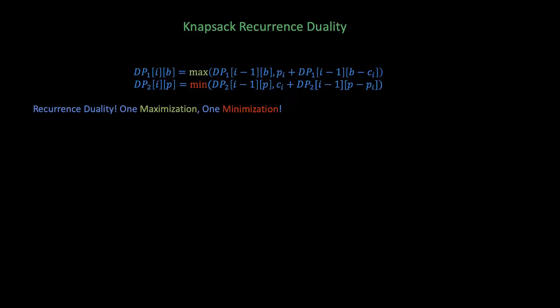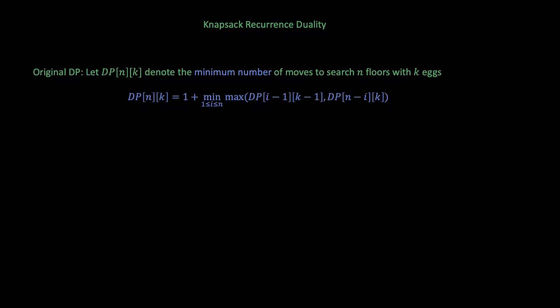This is not only specific to the knapsack problem but can be applied to so many other problems like the bin packing problem for example. Now the question here is can we do this to the egg drop problem? Can we get a dual recurrence and the answer turns out to be yes. Previously we defined DP[N][K] as the minimum number of moves to search N floors with K eggs. Now let's try to define the dual recurrence. Let DP2[T][K] define the maximum number of floors we can search with T egg drop turns and having at most K eggs.